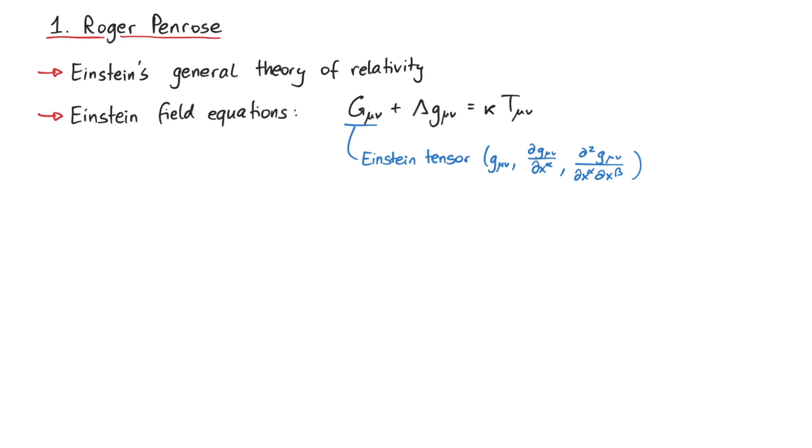Then we have a constant, the so-called cosmological constant, and again the metric. On the right, we have some more constants collected into the Einstein gravitational constant kappa, as well as the stress-energy tensor T.